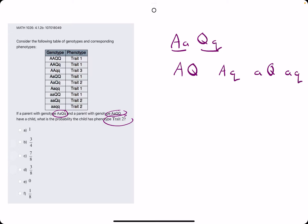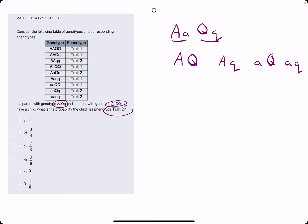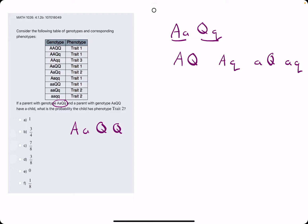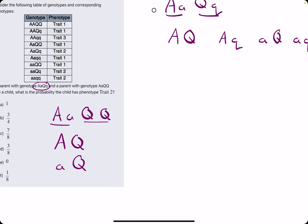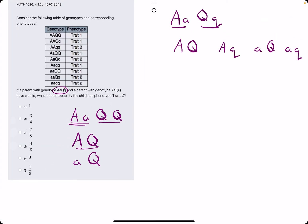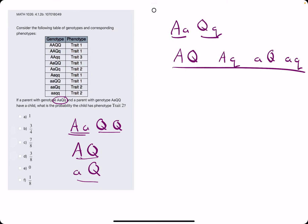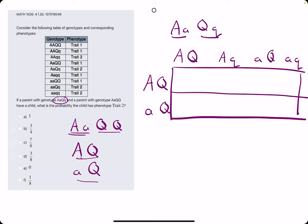Now let's break down parent two. We have capital A, lowercase A, and then two capital Q's. When certain letters with the same capitalization repeat, we have fewer possibilities. So we could either have capital A capital Q, or lowercase A capital Q — because capital Q is the only option for Q, and there are just two different options for A. So in total, we just have two different outcomes here. We'll put parent one's outcomes on top and parent two's on the side, creating a Punnett square.